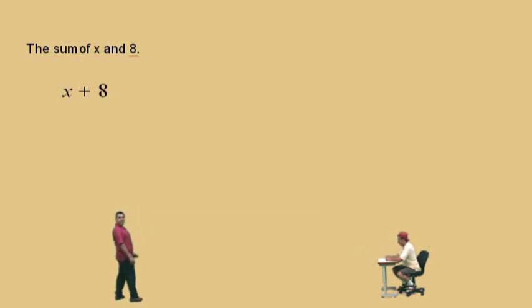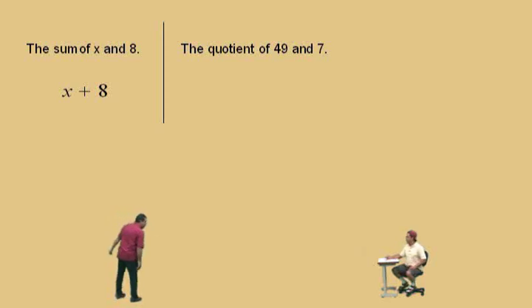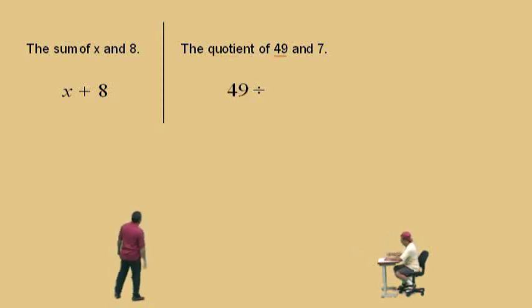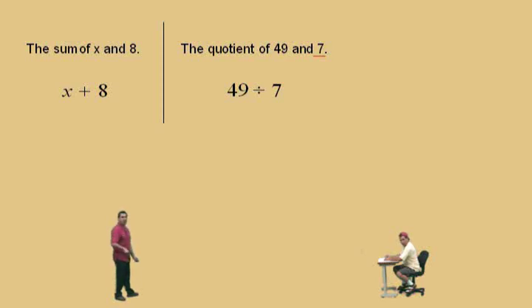Let's do another one. We have the quotient — now don't get scared. Charlie, what does 'quotient' mean? Division — that's right. So we'll put our division symbol there. What are the two things we're taking the quotient of? 49 and 7. Very nice. We could write this quotient as a fraction where 49 is the numerator and 7 is the denominator, but we're not worried about that right now.